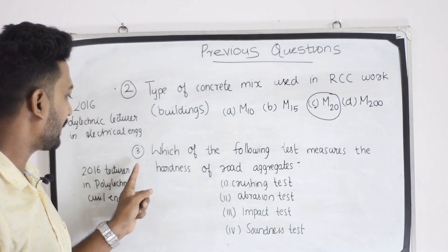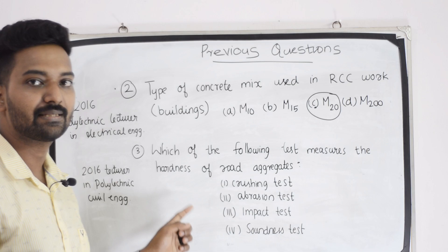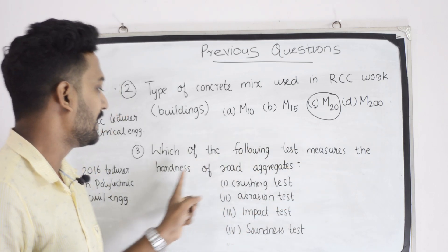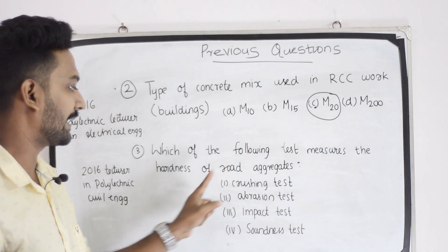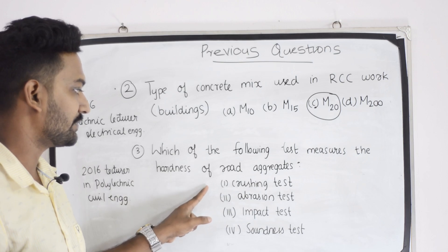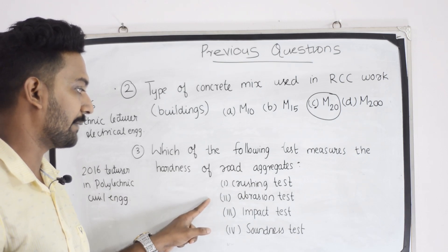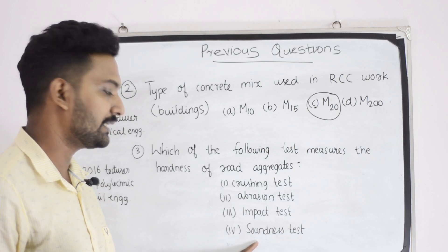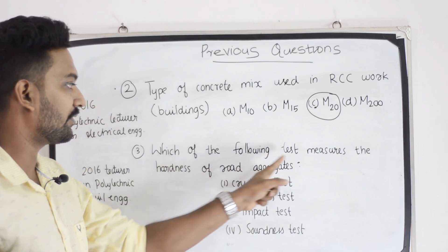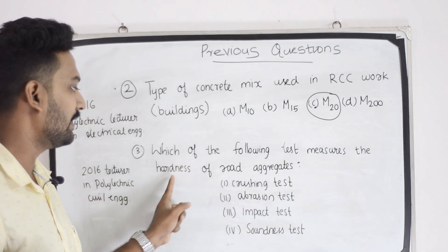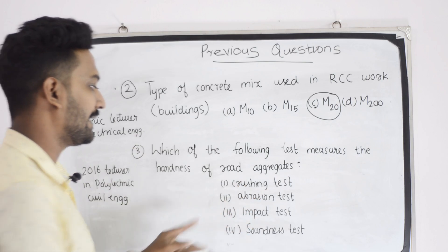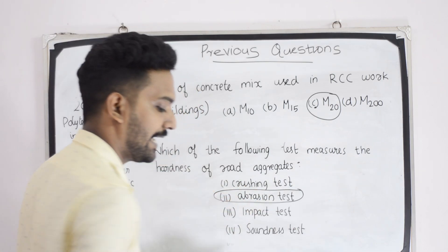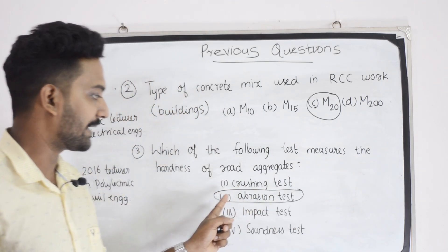In Polytechnic Civil Engineering, which of the following test measures the hardness of road aggregate? First option, correction test. Second option, abrasion test. Third option, impact test. And fourth option, soundness test. The answer is abrasion test.